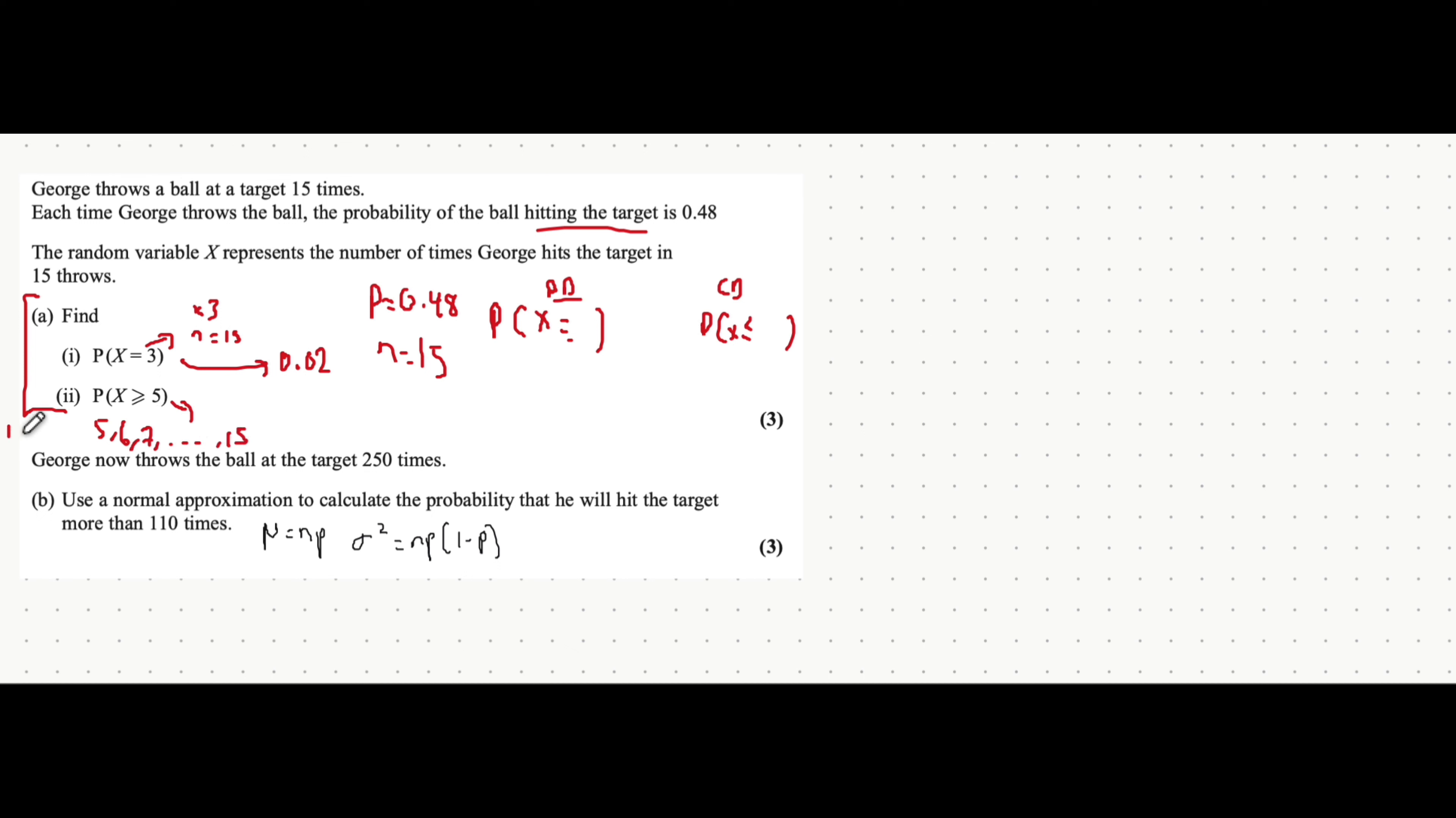The numbers that are excluded are 1, 2, 3, and 4. So essentially, if we do 1 minus the probability of X being less than or equal to 4, that gets you what you want, everything else.